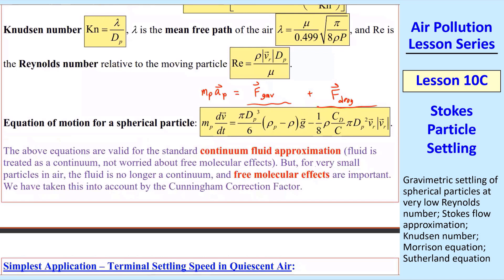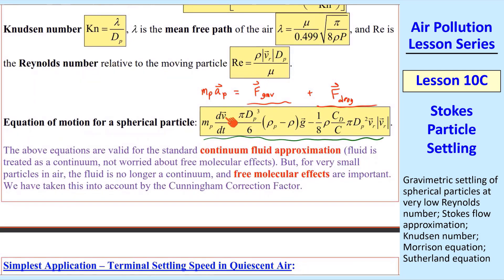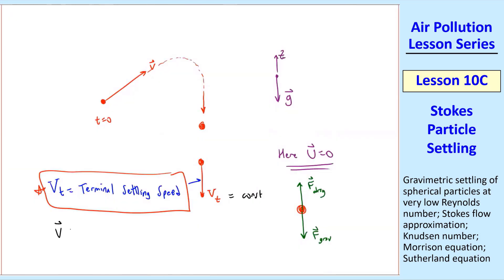Now if we go back and look at this equation for particle motion, we're looking at a case where this little v is equal to capital Vt in the negative z direction.